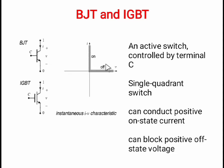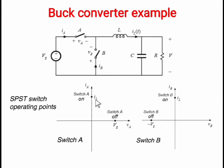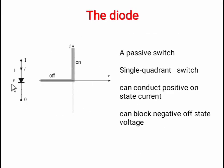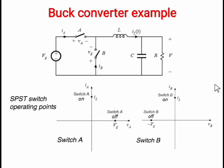Switch A requires first quadrant operation, so switch A is replaced by a BJT. Switch B requires positive current and negative voltage — this matches the diode characteristics, so switch B is replaced by a diode. Therefore, in a buck converter, switch A is selected as a BJT or MOSFET while switch B is selected as a diode.